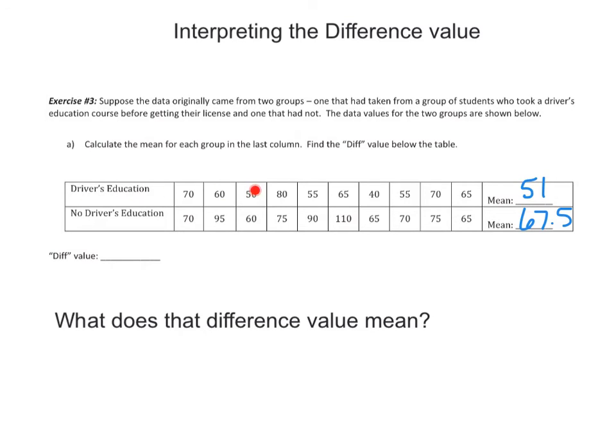So again, I've got this in L1. I'm using one variable stats, L1 only, and I get a mean of 51. One variable stats, L2 only, and I get my 67.5. Now to calculate that diff value, I'm taking my 51 minus my 67.5, and I get a difference value of negative 16.5. So what does that mean? Okay, and that's the whole point. Obviously, taking two means and subtracting is very simple, but what does it actually mean?